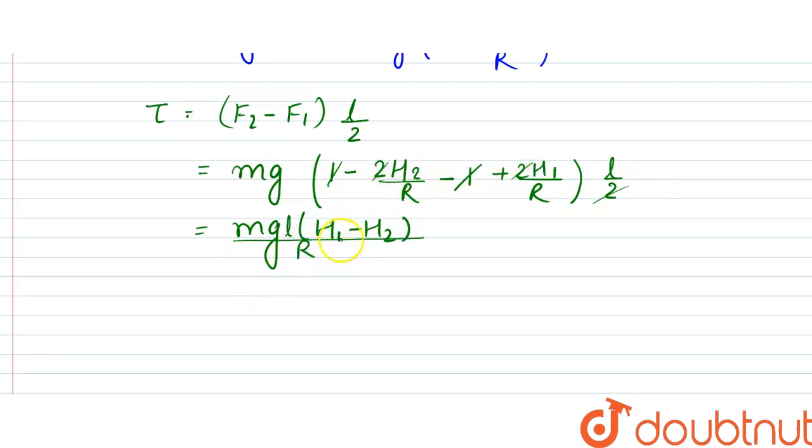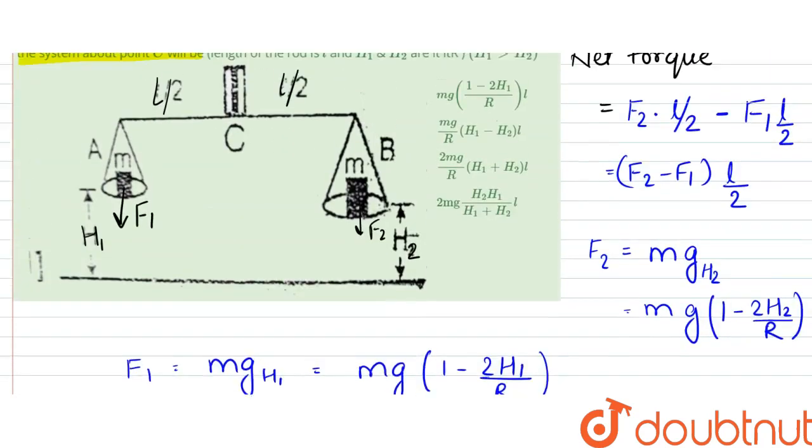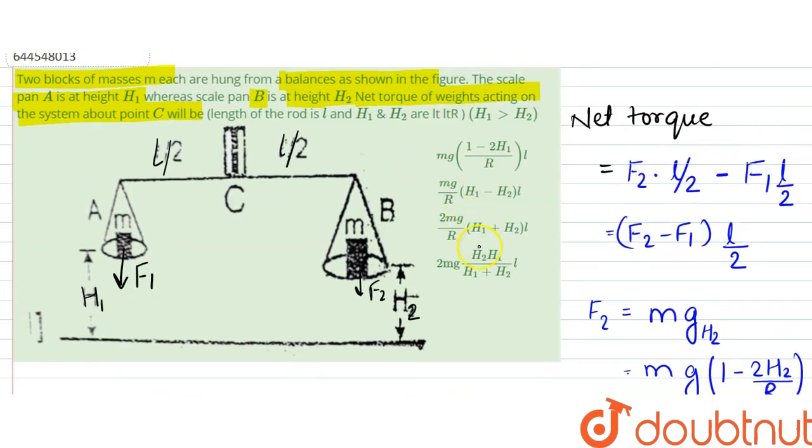And it would be R in denominator. So our answer would be MGL H1 minus H2 by R. So option B is the correct answer.